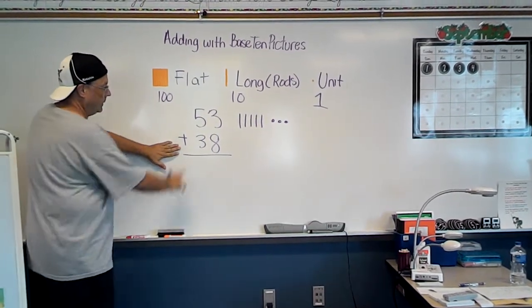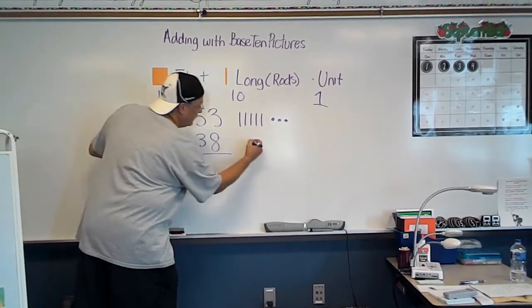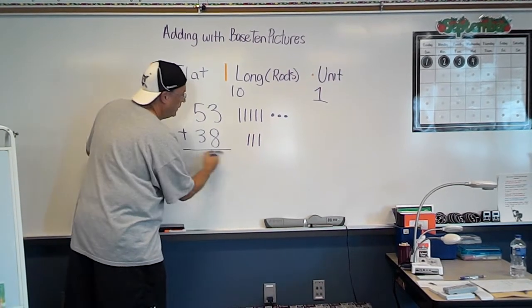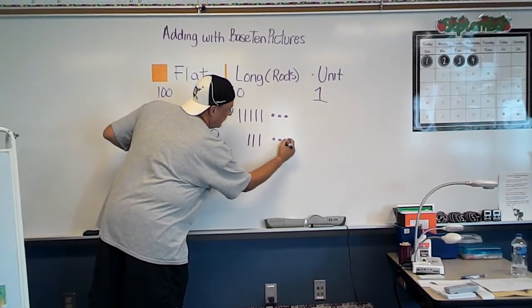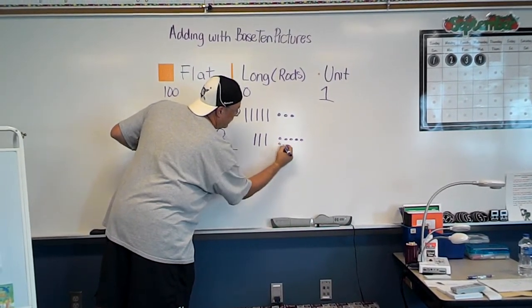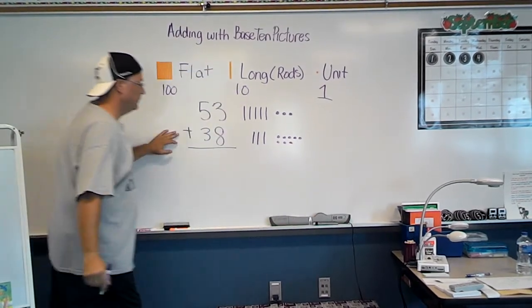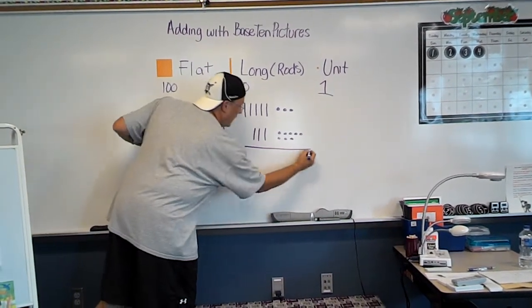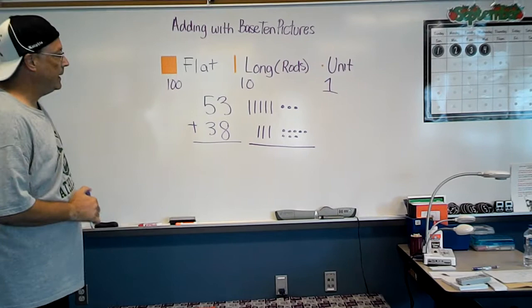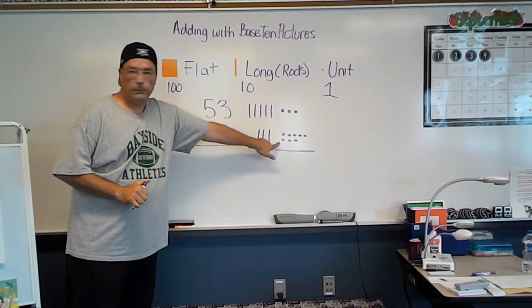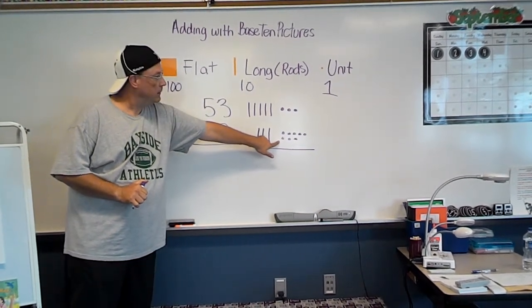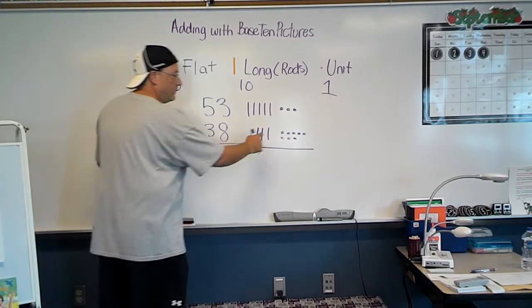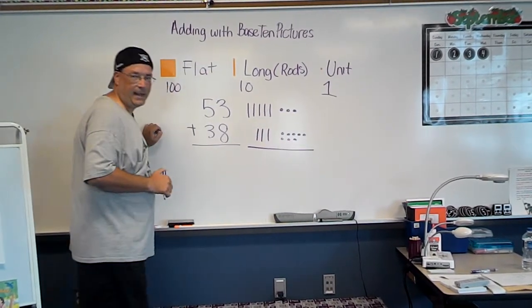And I'm going to come down here. I'm going to add my 3 10s here, my 3 longs, and my 8 units. So now, I'm going to take a look at that. And I happen to notice something over here. What do you guys notice? Do you notice that we have more than 10 ones over there?